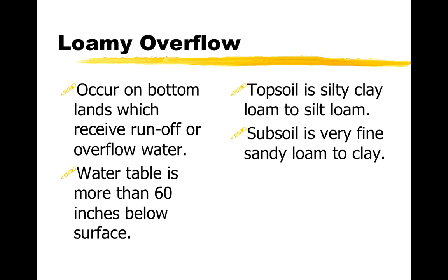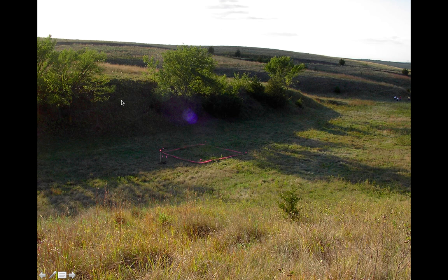The loamy overflow site will have similar soils; however, it's going to receive water from above. So it'll be down in the bottom of a canyon or between hills, where water can run from the sides of the hills and soak in. It has a deep water table, so not to be confused with sub-irrigated or wetland sites. The topsoil is a silty clay loam to silt loam — very fine textured — and the subsoil could have even clay in it. These sites look like areas where hills surround them and water runs down the side hills and settles in the bottom, which is the loamy overflow.